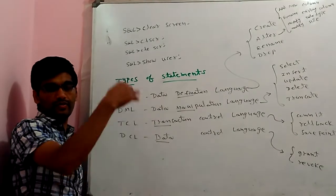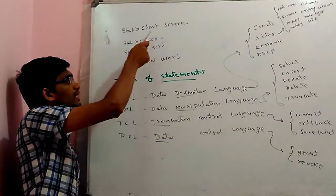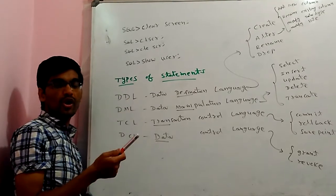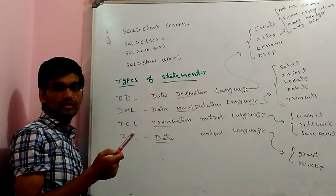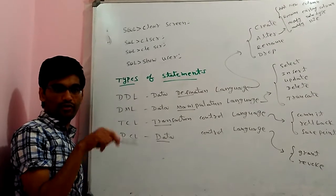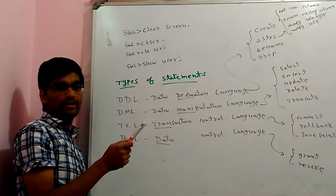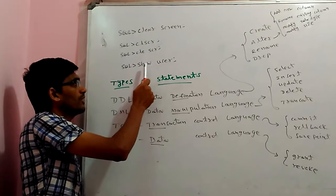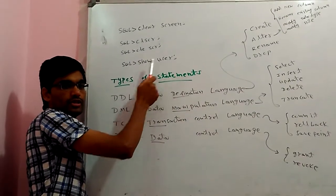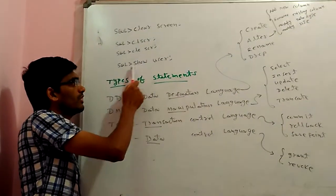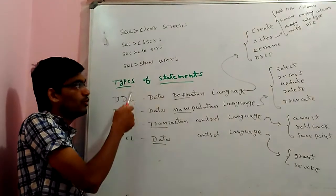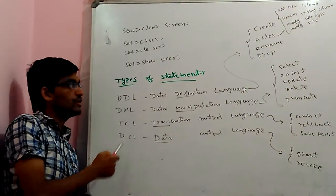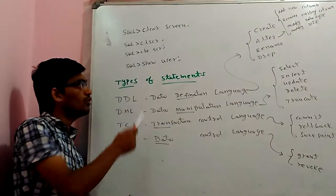If you want to see who has logged in and what the username is for the current SQL editor session, you can type the command 'show user'. It will display the username of whoever is currently logged in.